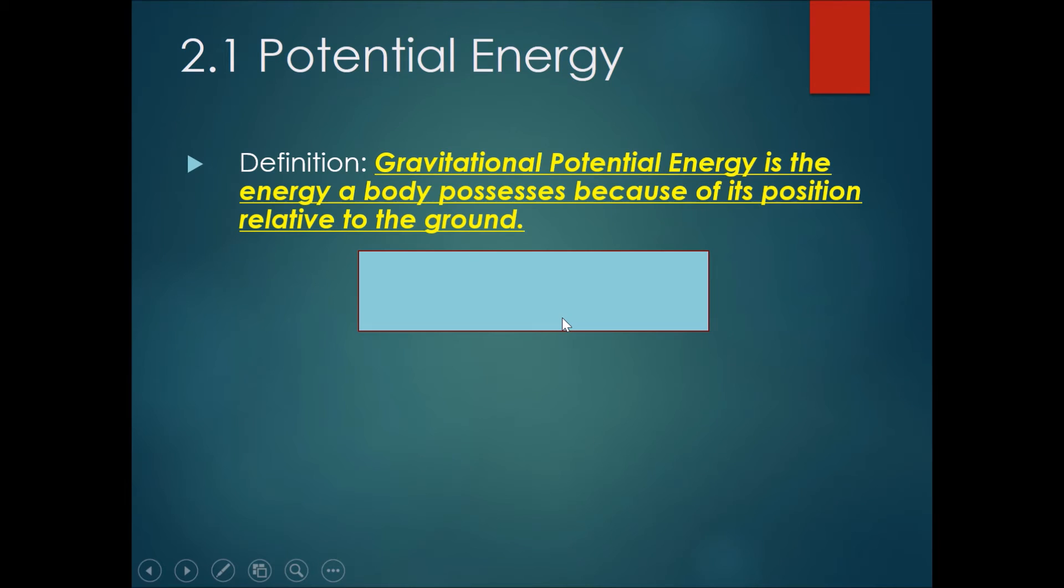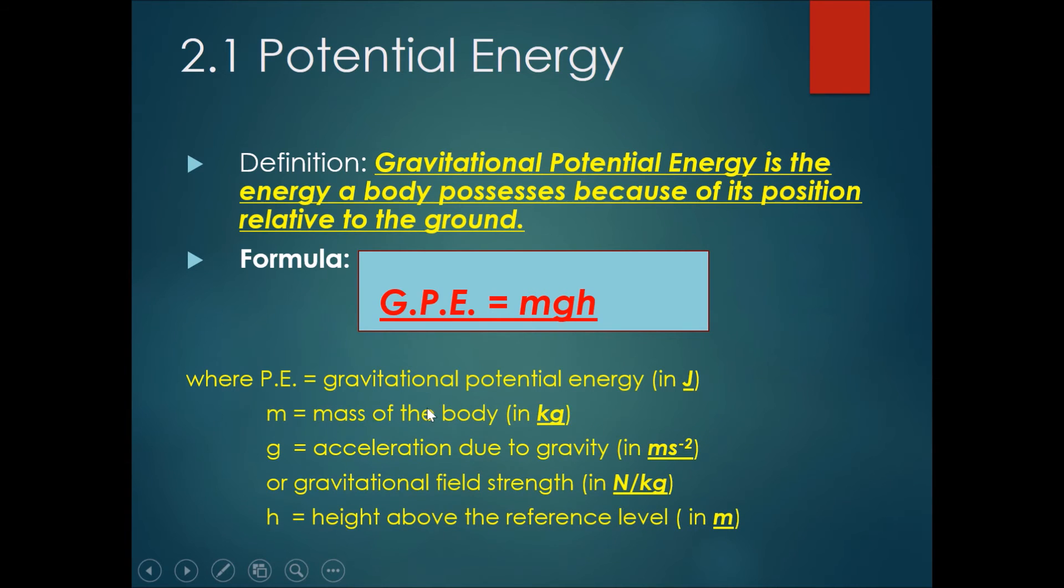The definition of gravitational potential energy is the energy a body possesses because of its position relative to the ground. Therefore, the formula is GPE equals mgh, where GPE is the gravitational potential energy in joules, m is the mass of the body in kilograms, g is the acceleration due to gravity in meters per second squared or the gravitational field strength in newtons per kilogram, and h is the height above the reference level in meters.